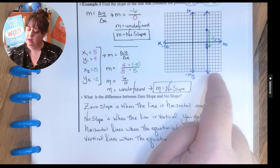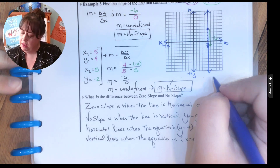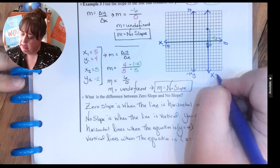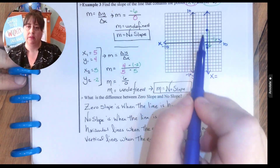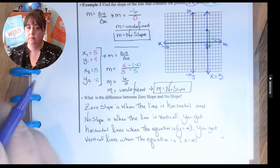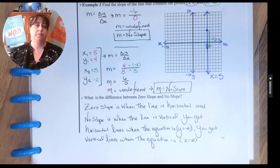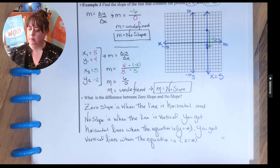This right here is the equation x equals what? x was always equal to 5. Just so that I could remember that for later on.